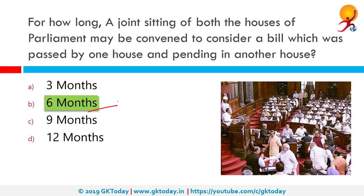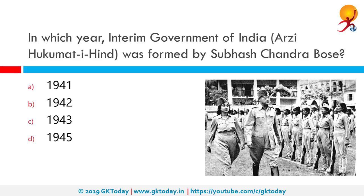Like currently you must be reading about the 10% quota for economically backward general classes — that sort of bill needs to be passed separately in both houses. In which year was the interim government of India, or Arzee Hukumate Hind, formed by Subhash Chandra Bose? This happened in 1943, where he established the provisional government of Azad Hind, also known as Arzee Hukumate Hind, in Singapore. It was supported by Nazi Germany, the Italian Social Republic and their allies. Under the provisional government, Bose was PM and Minister of War and Foreign Affairs; Ras Bihari Bose was designated Supreme Advisor; Captain Lakshmi headed the women's organization.